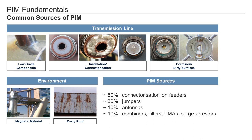External PIM is created by metallic components which are in the antenna's radiation field. These could be rusty roofs, metal chains, railings, etc. Internal PIM must be dealt with by the installation team. External PIM is a topic that has to be discussed with the customer.